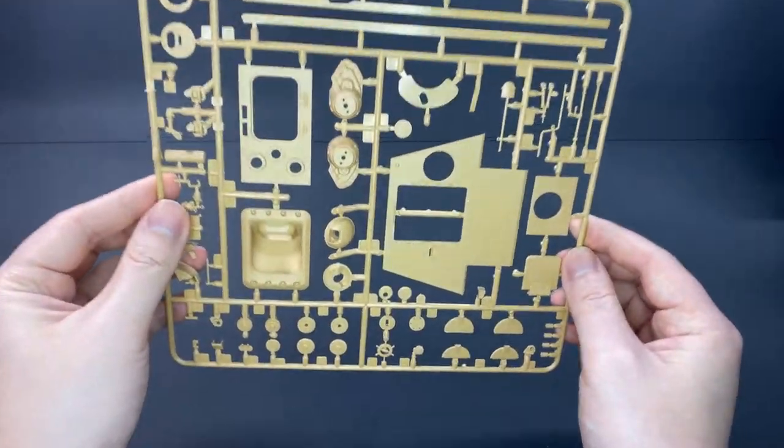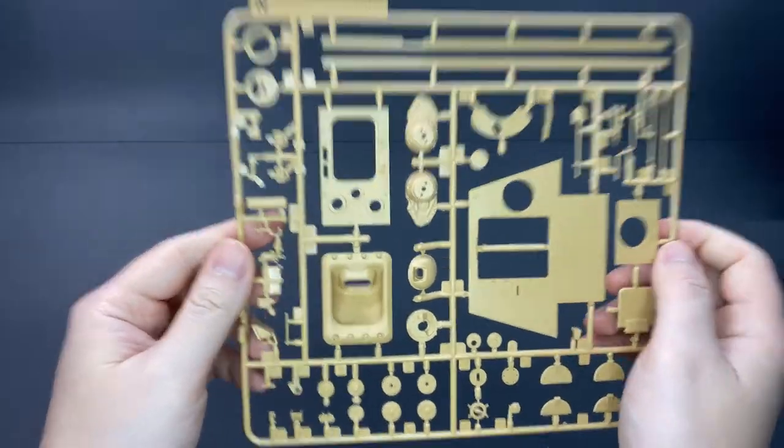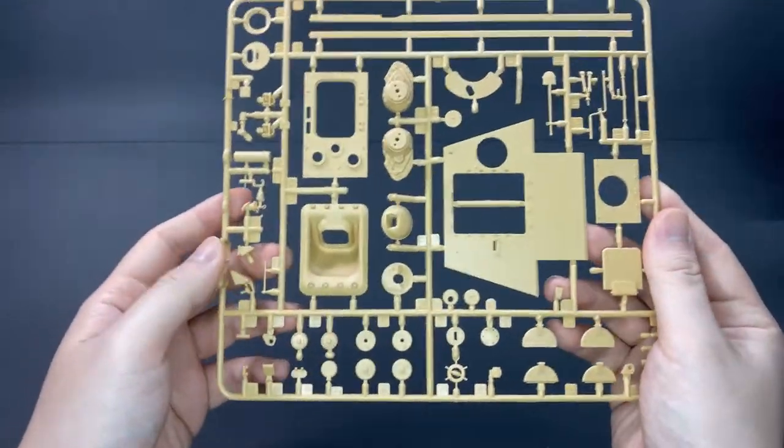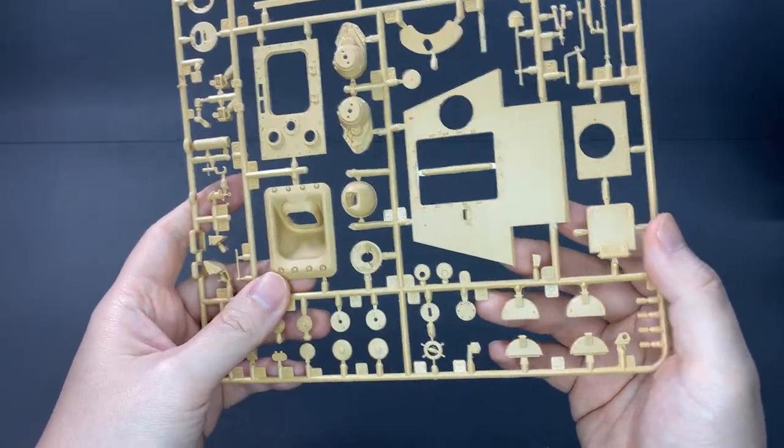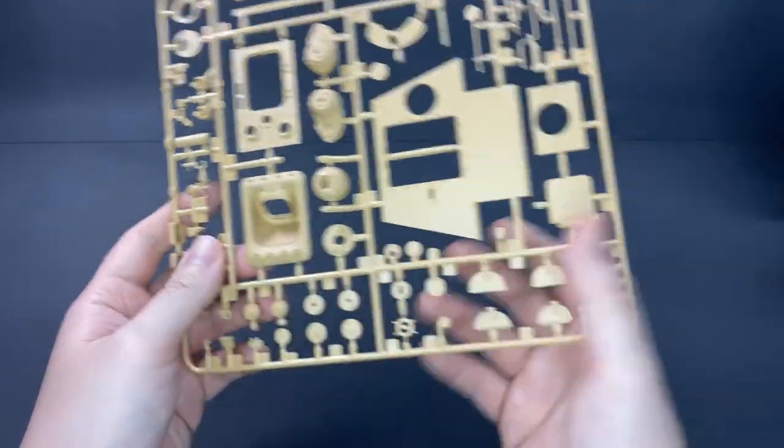The next sprue is Sprue N. Sprue N is a little special. It is from the Rye Field Models Jagdpanther kit. They have included this sprue for just a handful of parts, I think it's the hatches over here, and I think the rest will be going to my spares box.